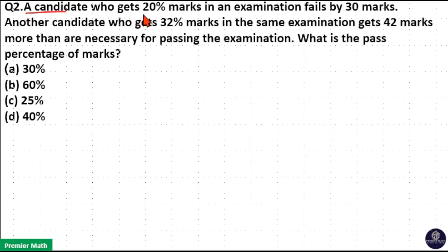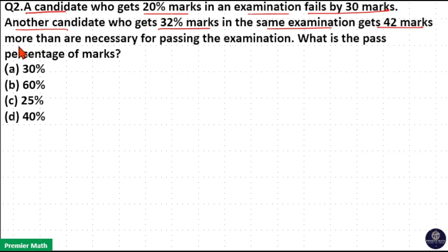A candidate who gets 20 percentage marks in an examination fails by 30 marks. Another candidate who gets 32 percentage marks in the same examination gets 42 marks more than the necessary passing marks for the examination. What is the pass percentage?